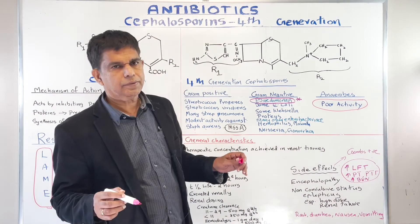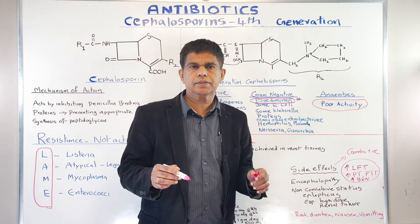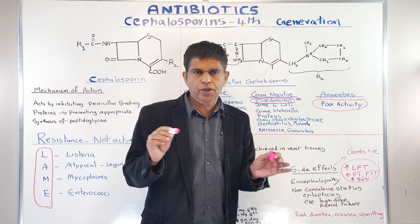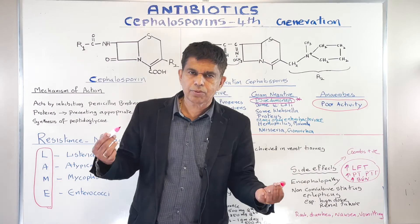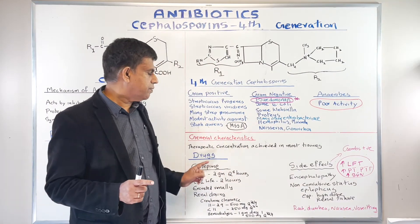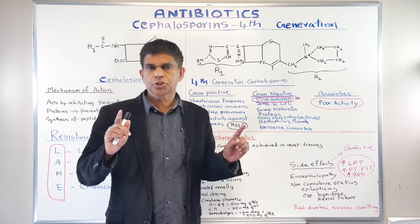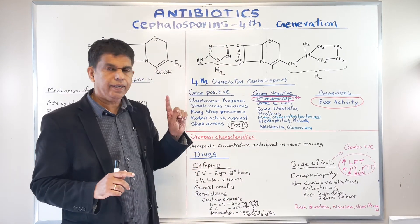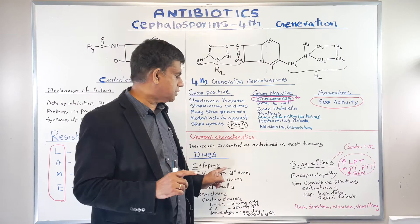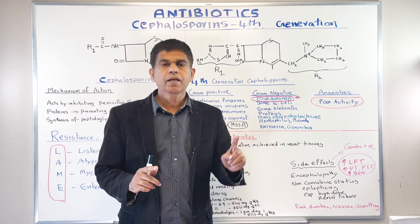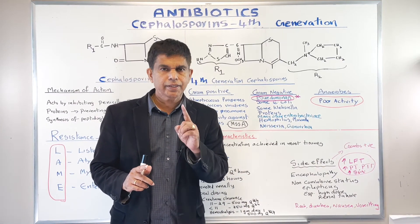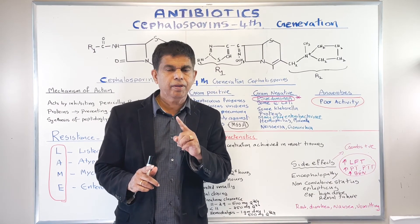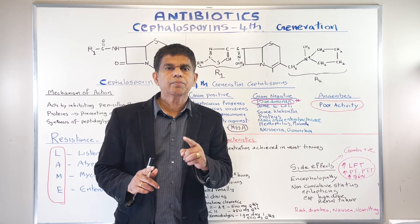General characteristics: therapeutic concentration is achieved throughout every part of the tissue — it can penetrate well, including the lungs, almost 100%. We have only one drug in this category, which is Cefepime. It's given IV, at a dose of 2 grams every 8 hours. Importantly, it is renally excreted — remember that above all else — so it requires renal dosing. First, calculate the creatinine clearance.